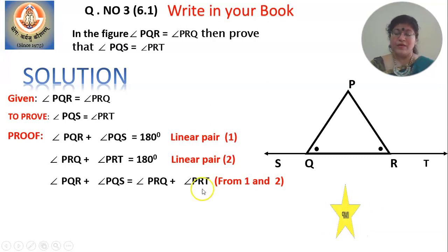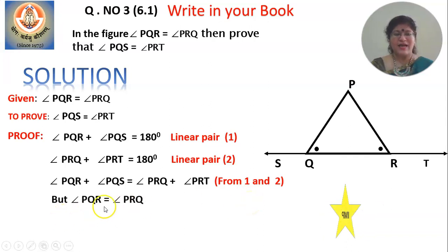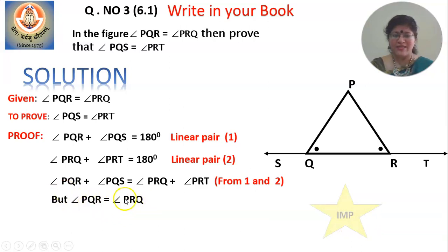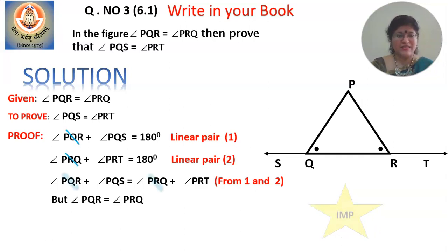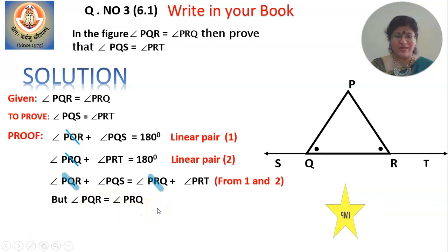Now use the given information: angle PQR equals angle PRQ. So we can cancel PQR and PRQ from both sides. Suppose PQR is 60 degrees — then PRQ is also 60. So 60 cancels with 60, and what remains is PQS equal to PRT. Therefore, angle PQS equals angle PRT — hence proved.